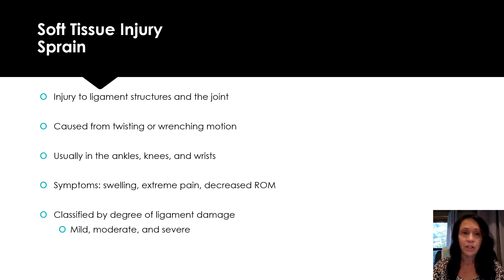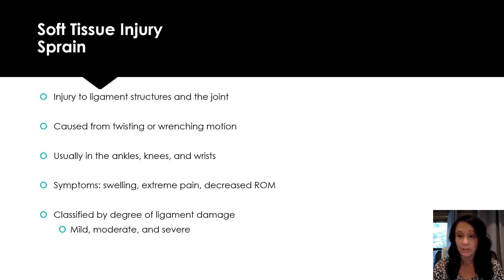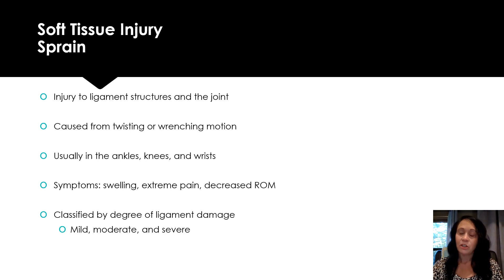A soft tissue injury — sprain — is an injury to the ligament, the structures, and the joint. It's caused from a twisting or wrenching motion. If the person falls and they twist, it's usually the ankles, the knees, the wrists — you probably see it when people step in holes outside. Symptoms include swelling, extreme pain, and decreased range of motion. We classify it by degree of ligament damage: mild, moderate, and severe.